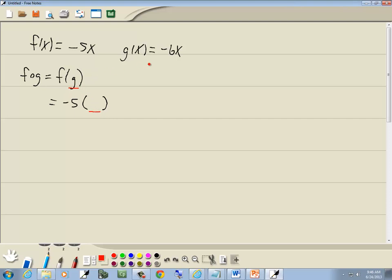We have g, but g was equal to negative 6x, so I'll put that in there. Negative 5 times negative 6 gives us a positive 30x.